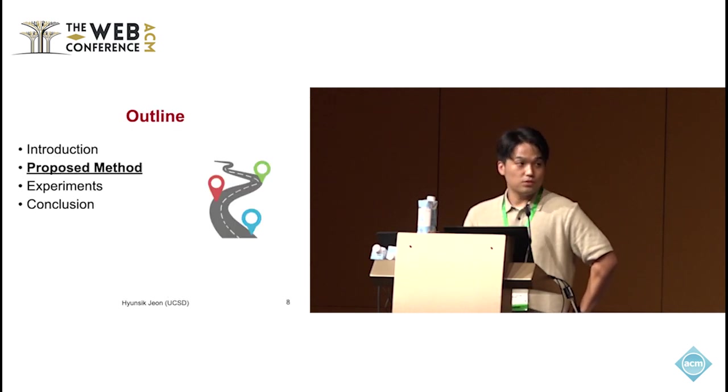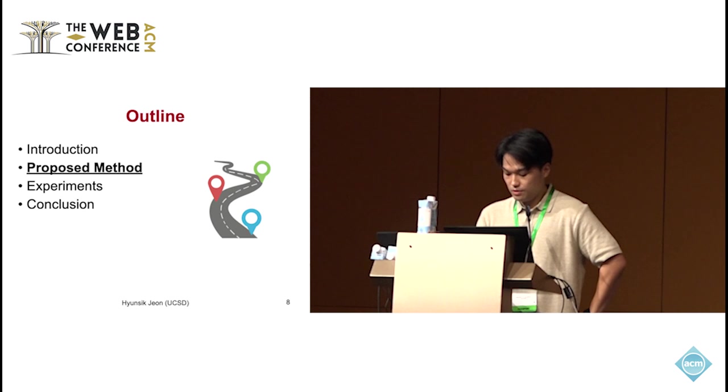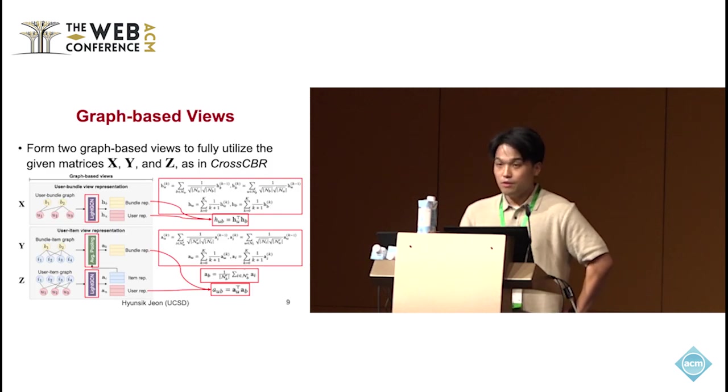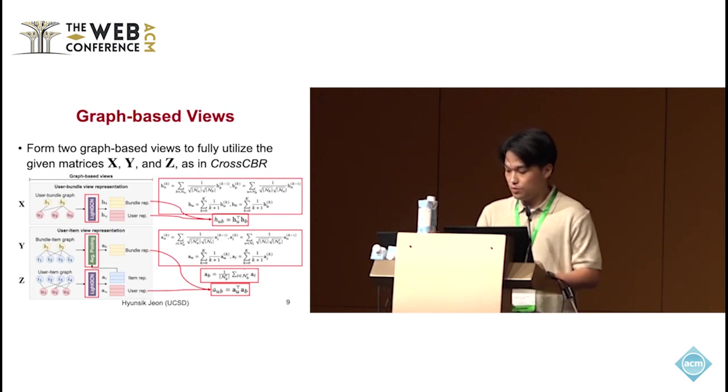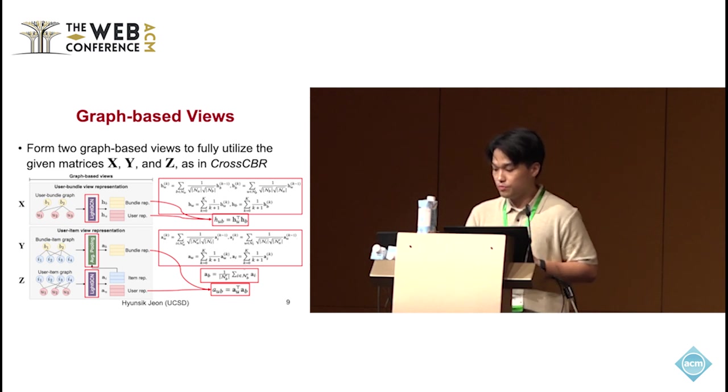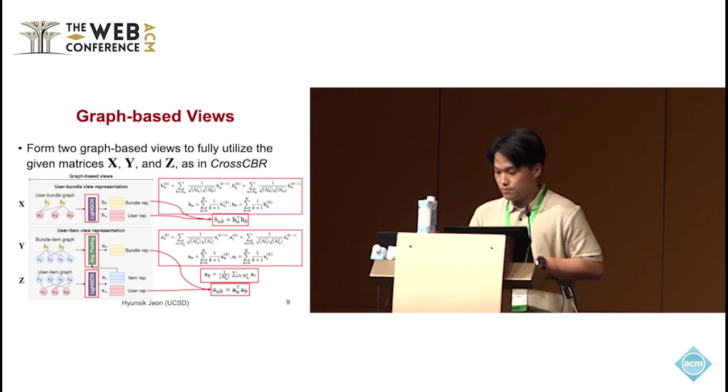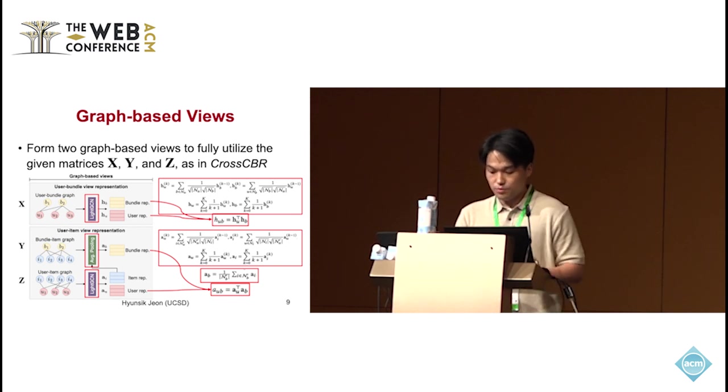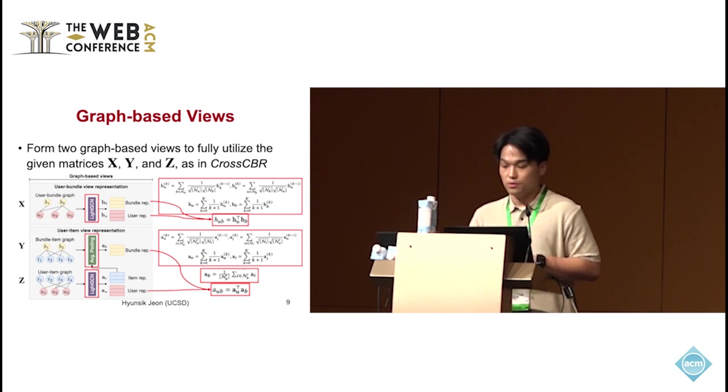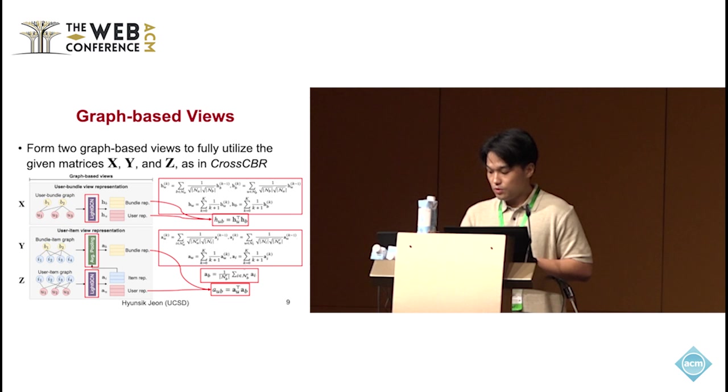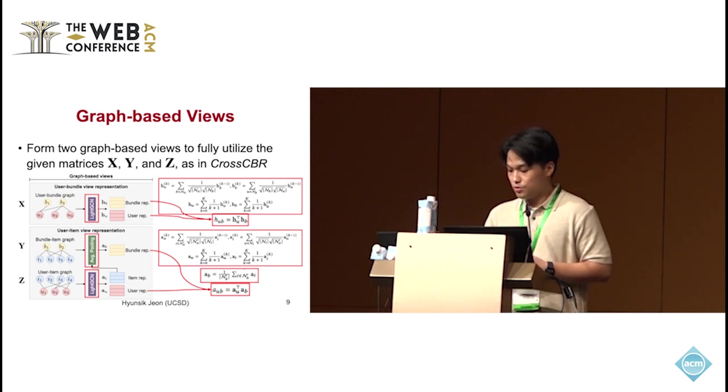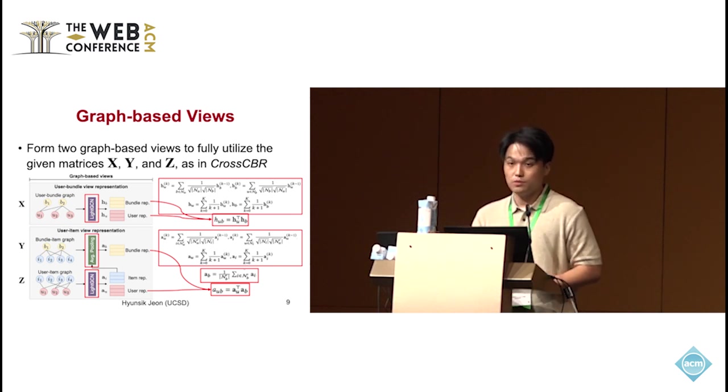So, let me introduce the proposed methods. Following the previous method, Cross-CBR, we used graph-based views to model the relationship between users, bundles, and items. We built two graph-based views, the user-bundle view and the user-item view. The user-bundle view captures historical interactions between users and bundles, while the user-item view captures the relationships between users and individual items that make up the bundles.